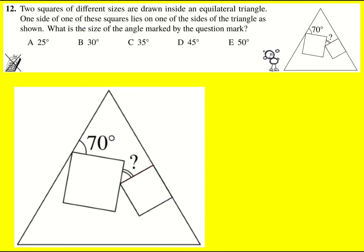This might look very difficult to start with. We're only given one angle and we're asked for this missing angle here, except we're told it's an equilateral triangle, so that must be 60.